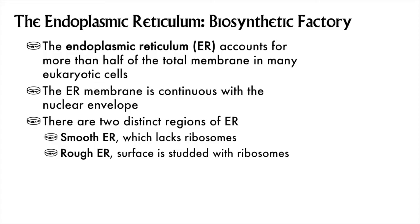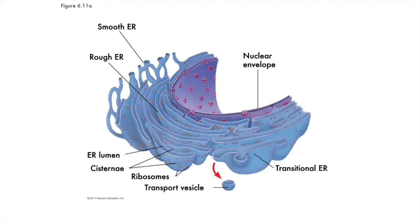The ER is attached to the nuclear envelope, and there are two types of ER: smooth and rough. Rough ER is ER with ribosomes, and smooth ER lacks ribosomes. In this drawing the nuclear envelope and ER are different colors, but that's just for clarity's sake — they really are continuous with each other. The ER is made of flattened sacs of membrane that have an internal space, kind of like a pita bread. Each sac is called a cisterna, and the space inside is called a lumen.